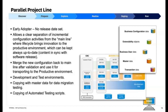You can access this content in a dedicated SAP Activate methodology for Parallel Project Lines early adopters. If you want to see only the tasks that have been adjusted for this new functionality, access the Parallel Project Line tag to display these tasks.